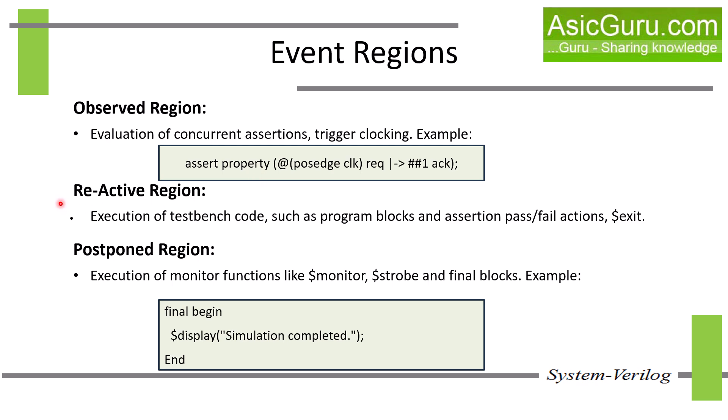Next is the reactive region. This is mainly used to execute testbench code like stimulus generation, monitors, coverage blocks, and procedural statements from program blocks and initial blocks. Assertion pass/fail actions are also scheduled in this region. This region executes after all design logic and assertions have been executed, keeping testbench code separate from the DUT to avoid race conditions and ensuring the testbench doesn't interfere with RTL updates.